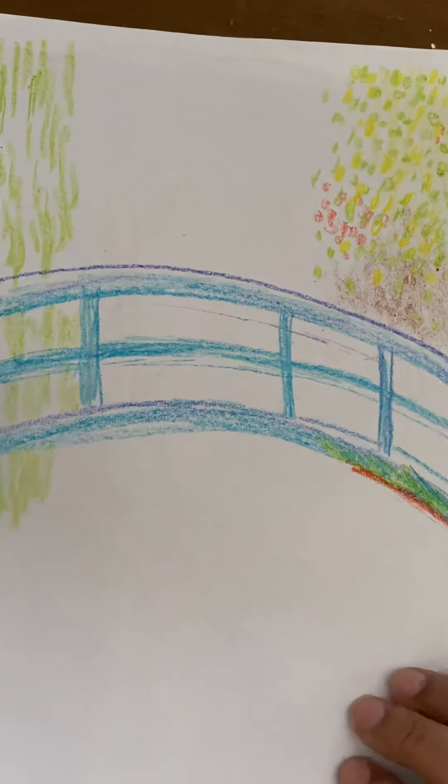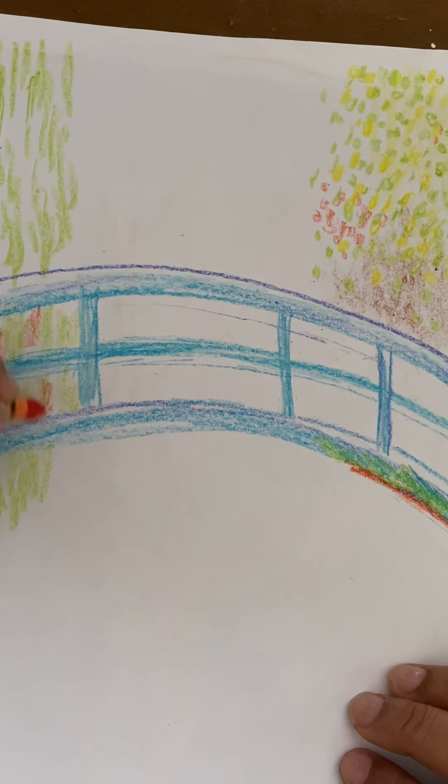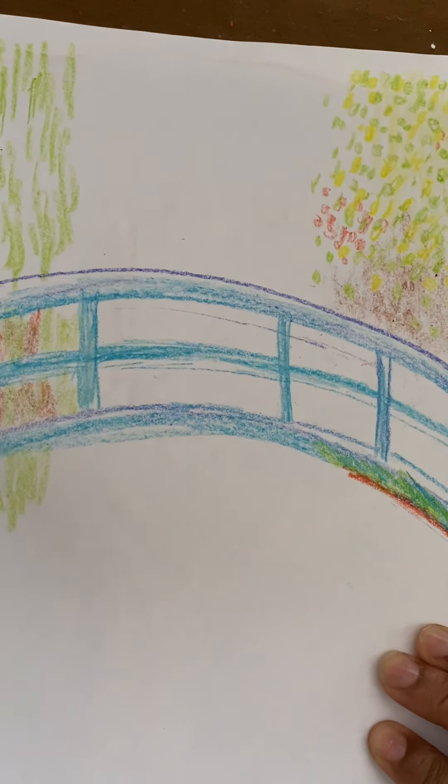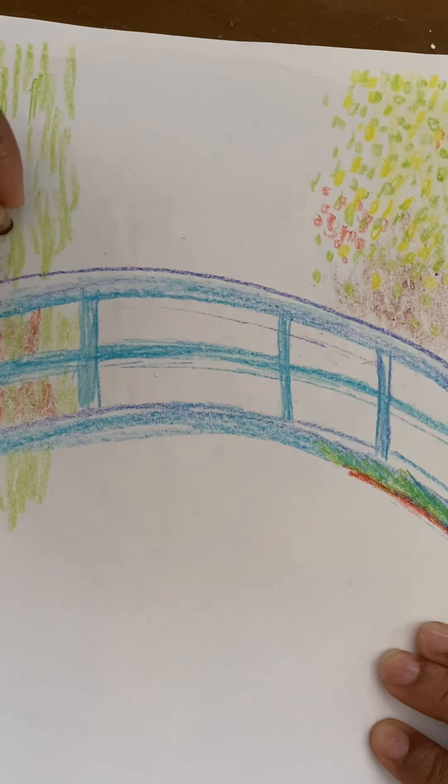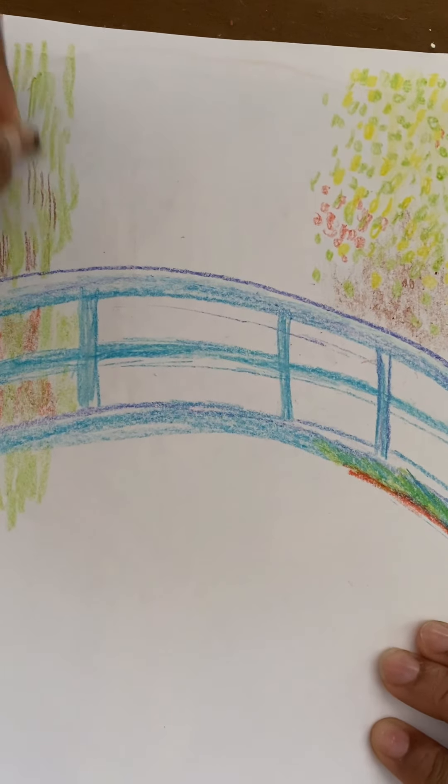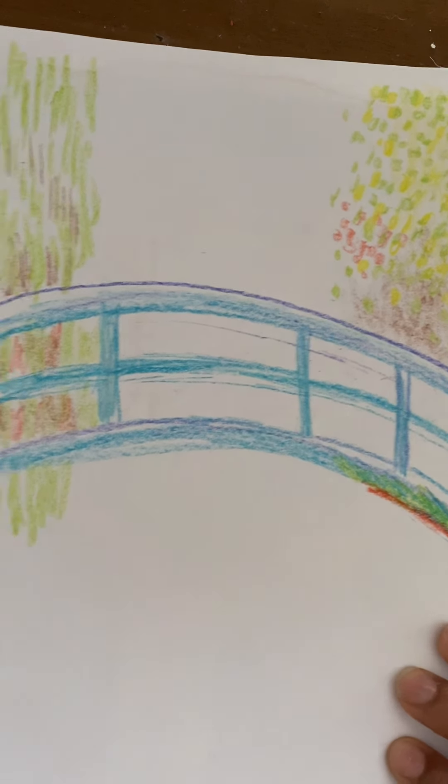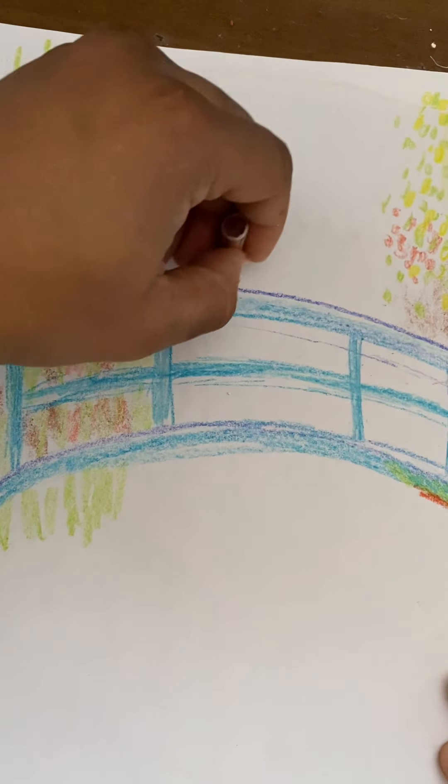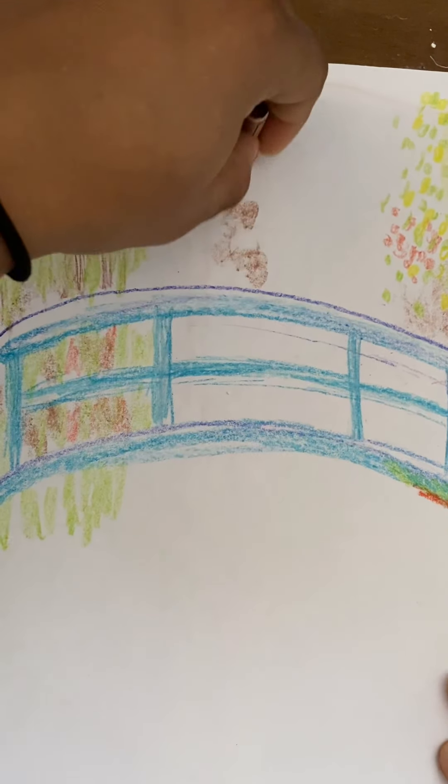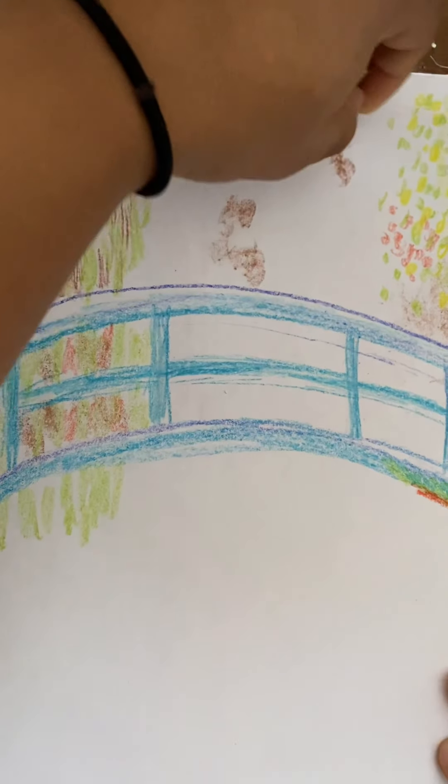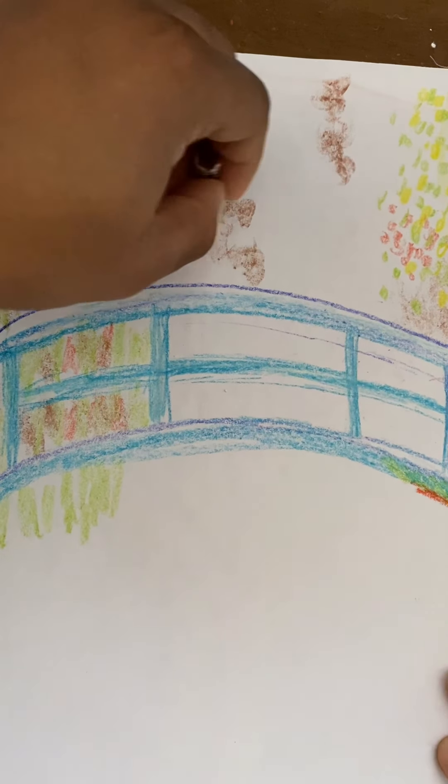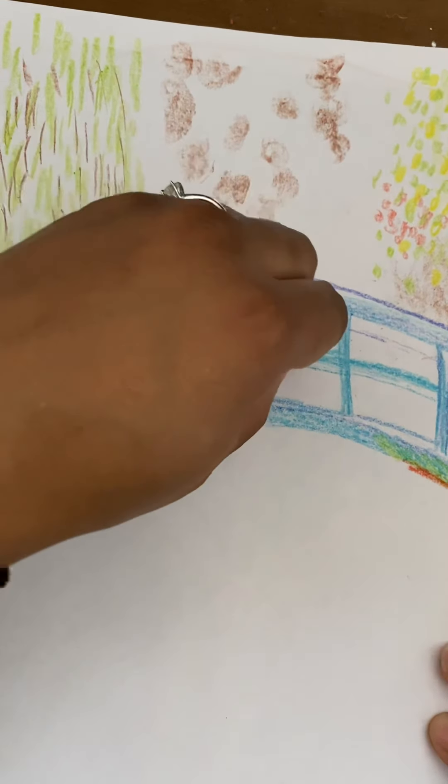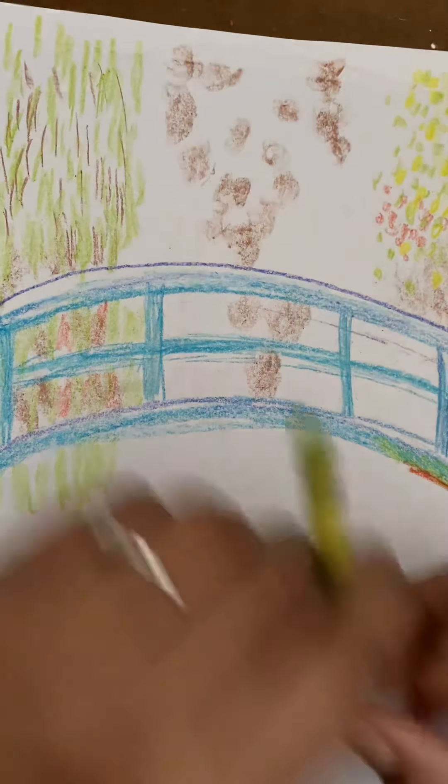And then he has a little bit of brown in here too, an orange. And this area right here in the middle. So I'm going to add some brown leaves. I'm going to add some green with it too.